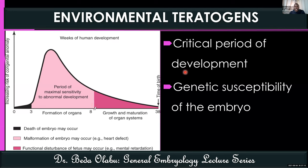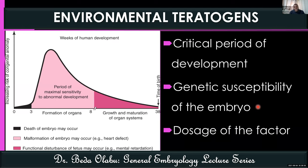The second factor affecting environmental teratogens is the genetic susceptibility of the embryo — if you subject embryos of the same developmental period to the same teratogen and dosage, some will develop birth defects and others will not, perhaps due to genetic predisposition. Lastly, dosage also matters a lot — a large dose of teratogen puts one at a much higher risk of developing a birth defect.